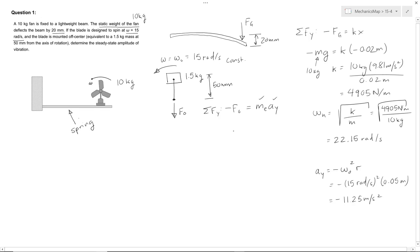So now we know this mass, and we know the acceleration, and we can find that F naught, the magnitude of our forcing function, is then 1.5 kilograms times 11.25 meters per second squared equals 16.875 newtons.